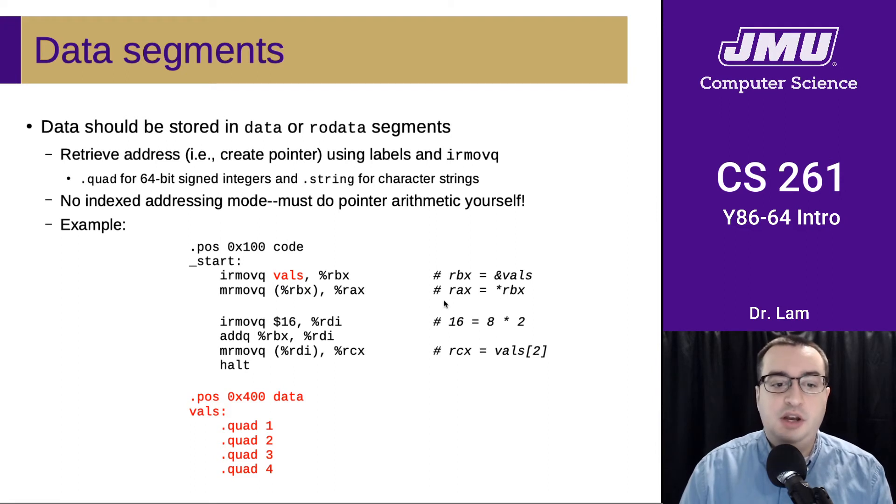And this is essentially like dereferencing a pointer, right, because we're using the indirect, we're using the memory to register move here. One interesting thing about this is that you have to do the pointer arithmetic yourself, because we don't have any indexed addressing mode. So if you wanted to, for instance, access the third element, you're going to need to add the appropriate offset to the address of the base of the array. And so you're going to have to do all that arithmetic yourself.